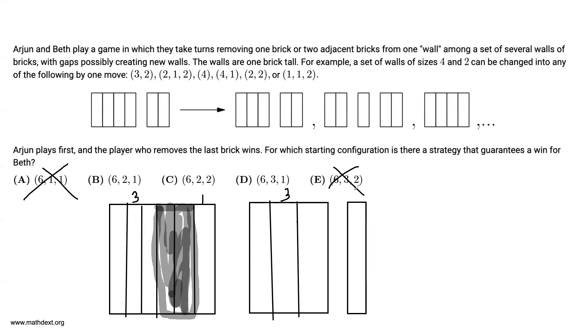And once again, you see that this is symmetrical, because there are two 3s and two 1s. So whatever Beth does, Arjun can copycat it, which means this case fails.